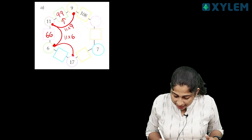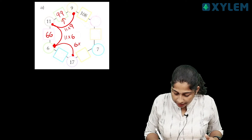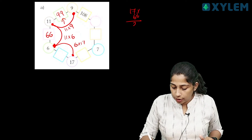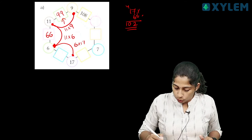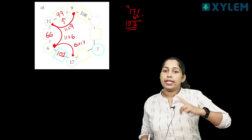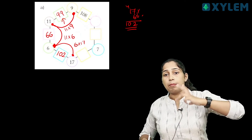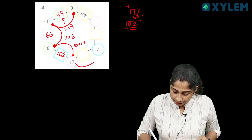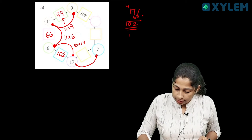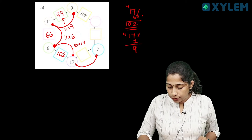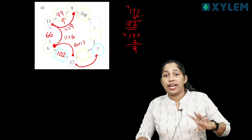6 into 17. Let's do one column. 17 into 6: 7 × 6 is 42, balance 4. 6 plus 4 is 102. So the answer is 102. Now let's solve 17 into 7. 7 × 7 is 49, balance 4. 1 × 7 is 7, plus 4 is 11.